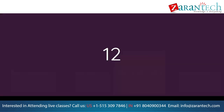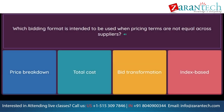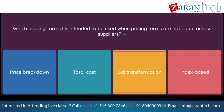Question: Which bidding format is intended to be used when pricing terms are not equal across suppliers? Option 1: price breakdown. Option 2: total cost. Option 3: bid transformation. Option 4: index based.